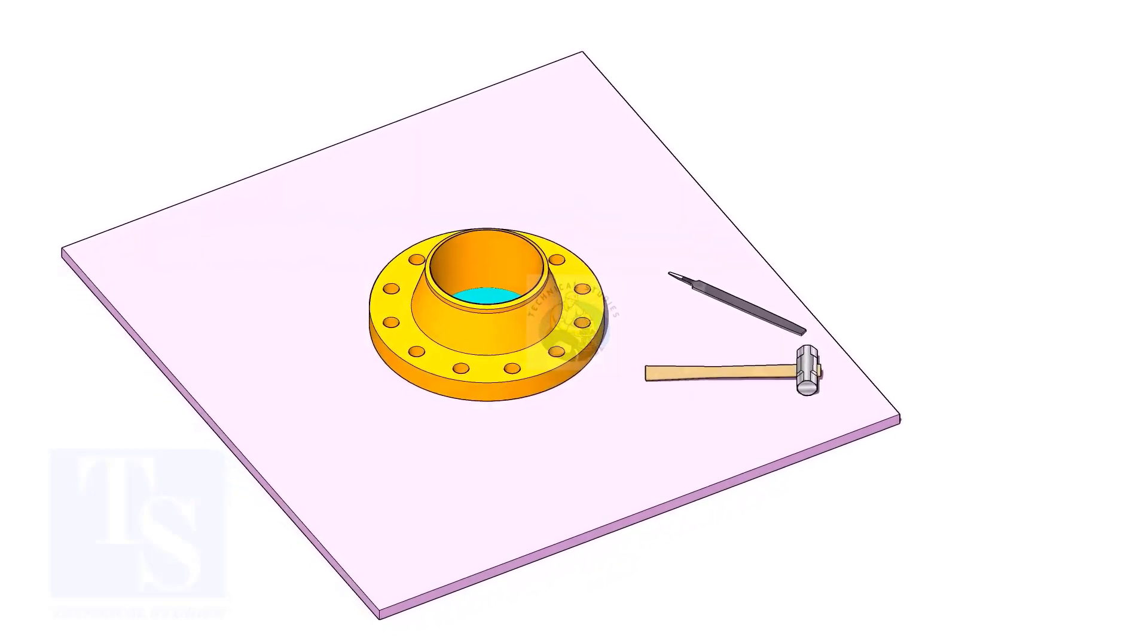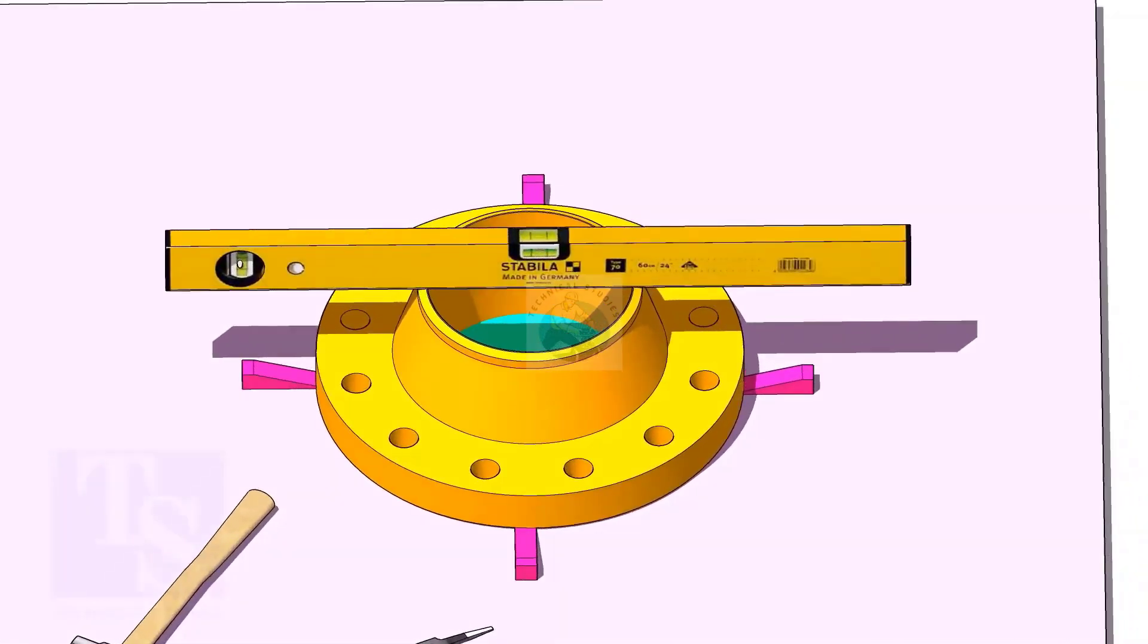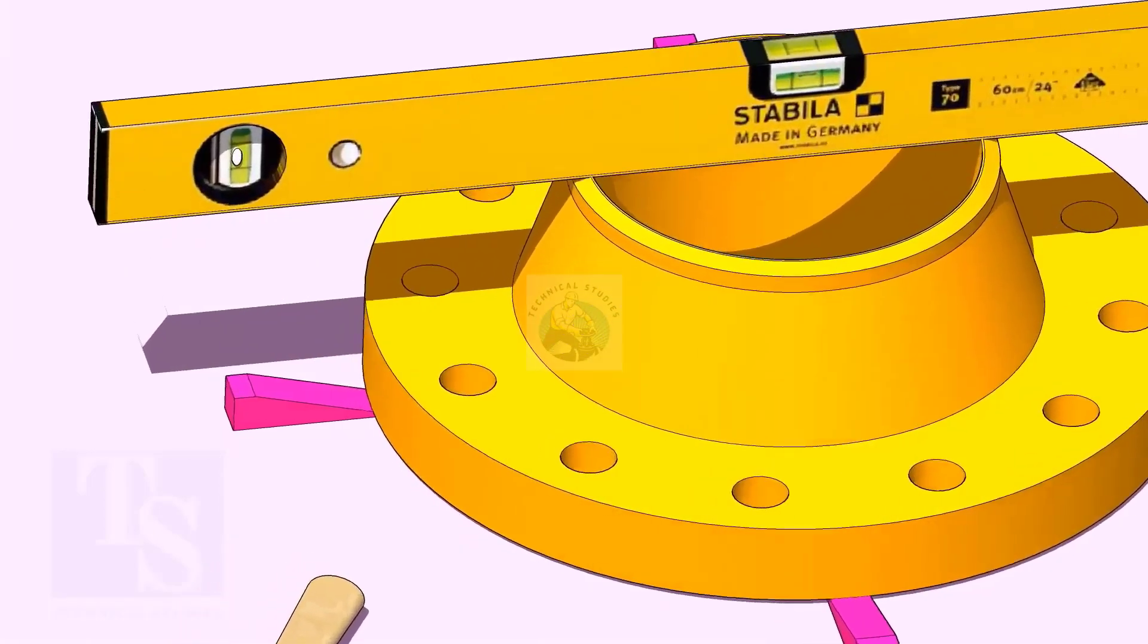Use small wedges to level the flange. Mating edges of the flanges and the tee shall be cleaned before the fit up.